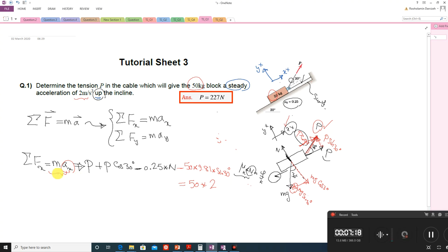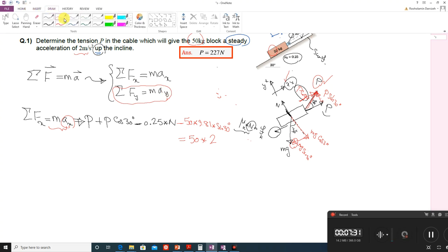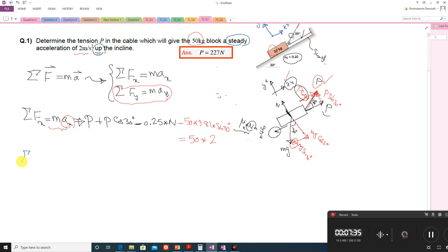Similarly, we can write the equilibrium of forces, not equilibrium sorry, second law of Newton in vertical direction. Σ F_y equals to m a_y. In y direction we have N which is positive, completely. We have vertical component of this cable force P sin θ which is positive, it's upward.